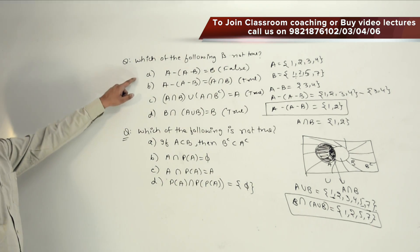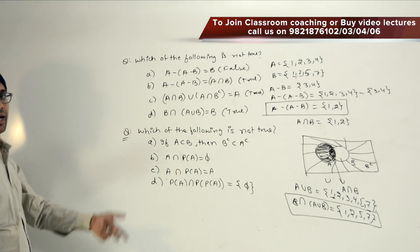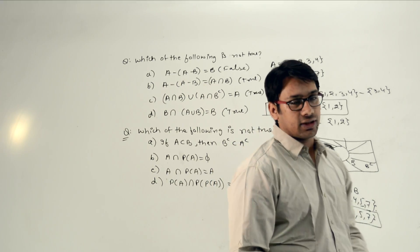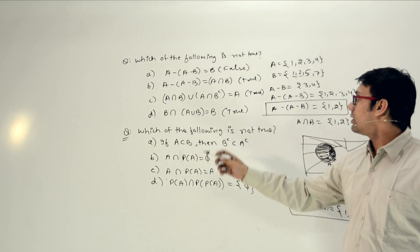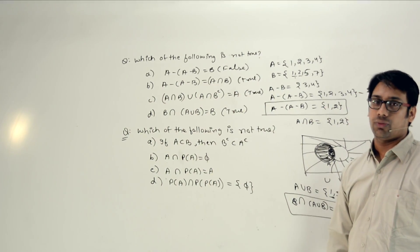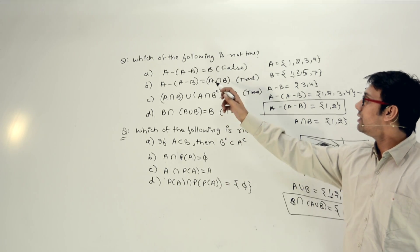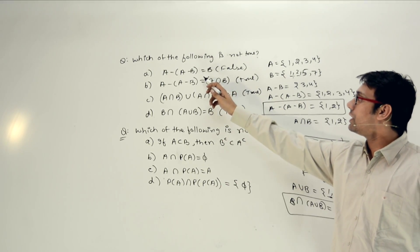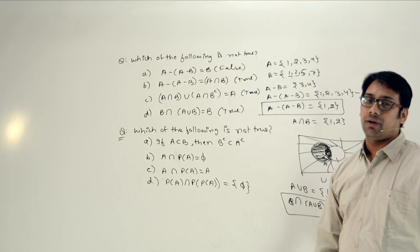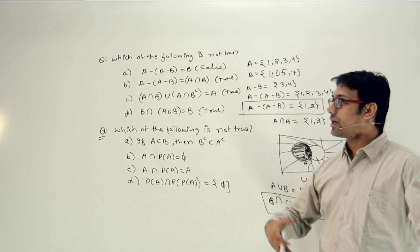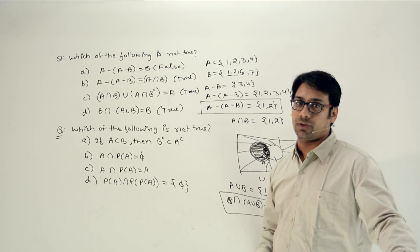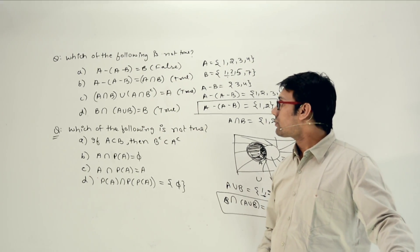So option A is false. If you just look at these questions and think they are simple, you will definitely make mistakes. You can see that taking concrete values shows option A is false, but if you try to solve it without substituting values, you may not be able to get the right answer.